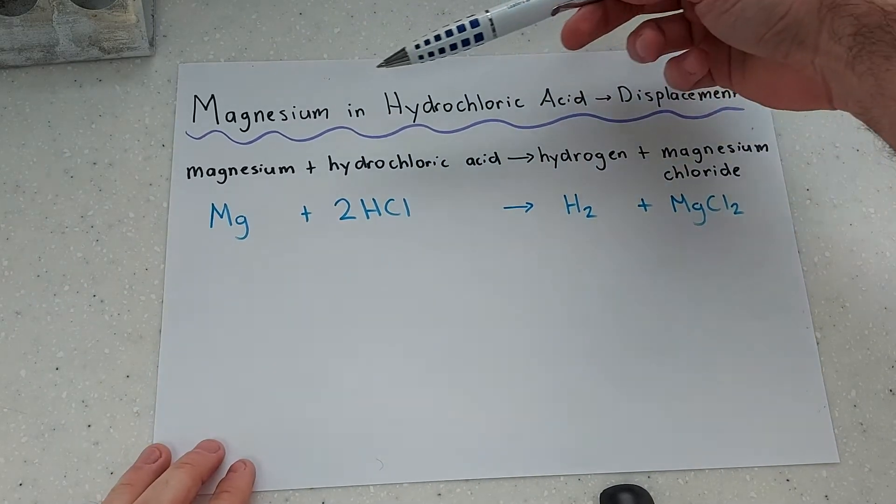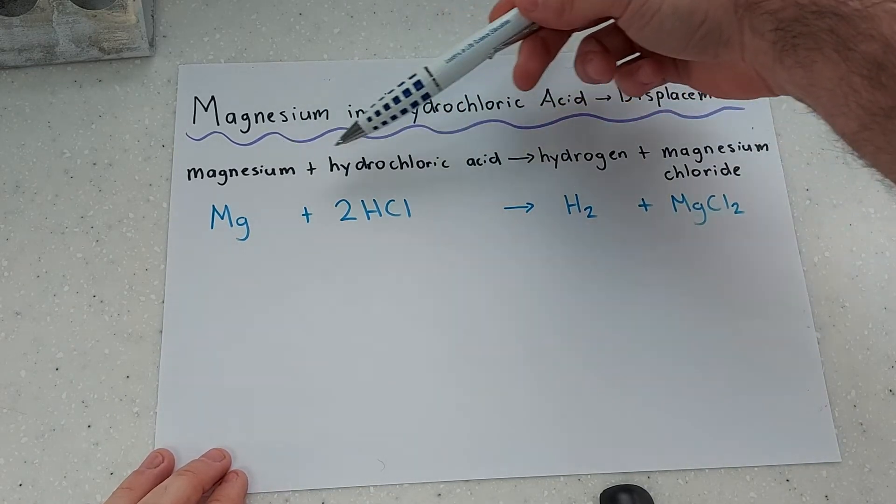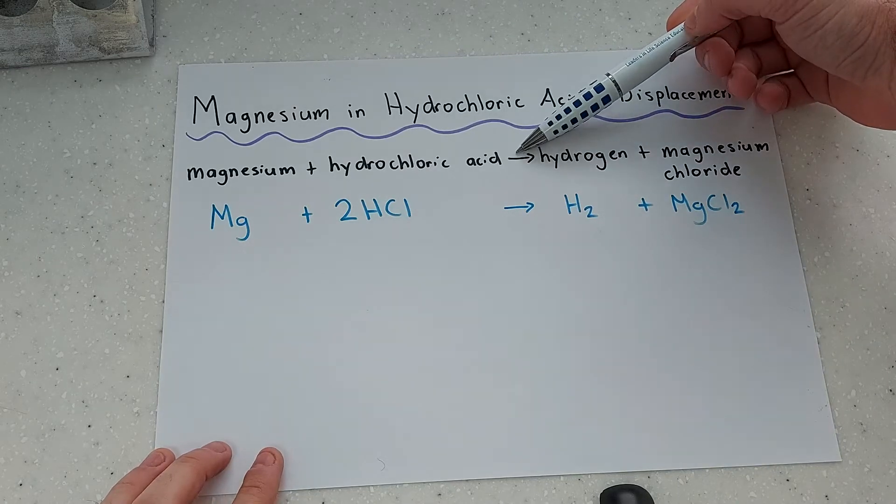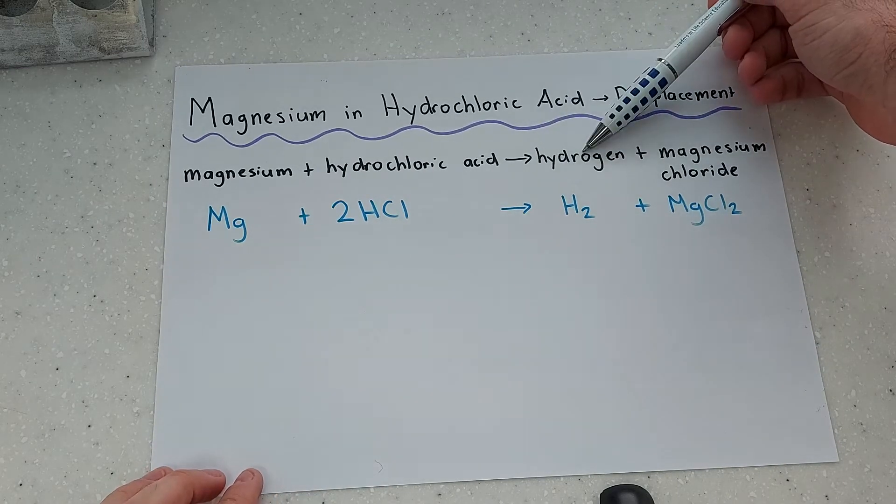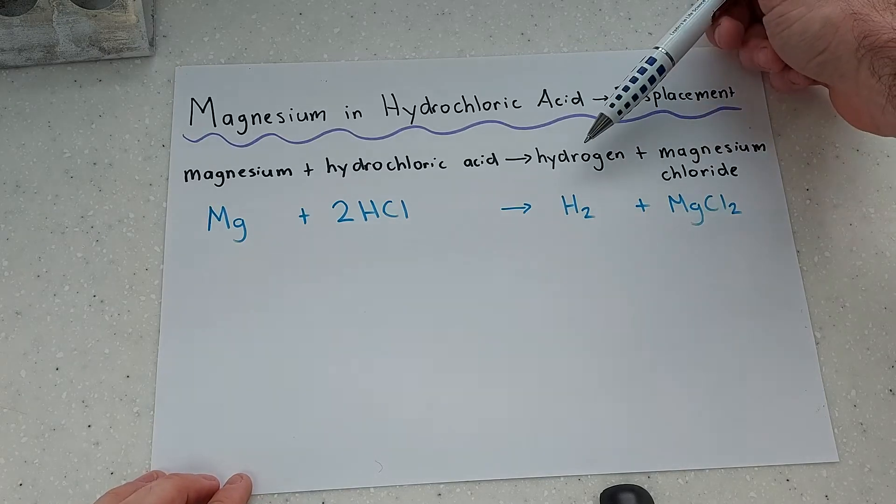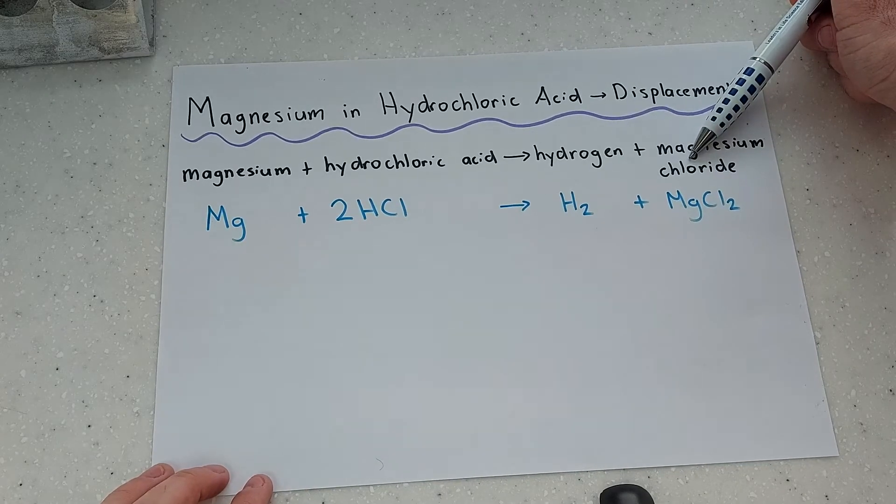I'm going to be placing magnesium metal in hydrochloric acid, so these are my two reactants. A chemical reaction will occur between them which will give me hydrogen and magnesium chloride as my two products. Hydrogen will be a gas and magnesium chloride will be the solution that you see in the test tube.